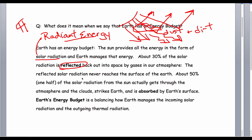So, about 50% or one half of the solar radiation from the Sun actually gets through the atmosphere and the clouds and strikes Earth. And it is absorbed by Earth's surface.